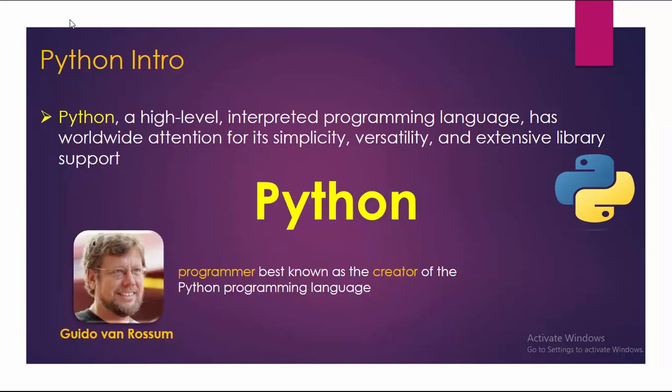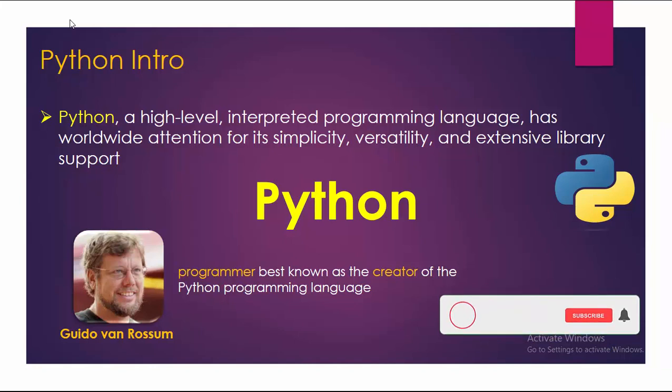Python is developed by Guido Van Rossum. He started implementing Python in 1989 and he named Python after the comedy television show Monty Python's Flying Circus. It is not named after the Python snake.